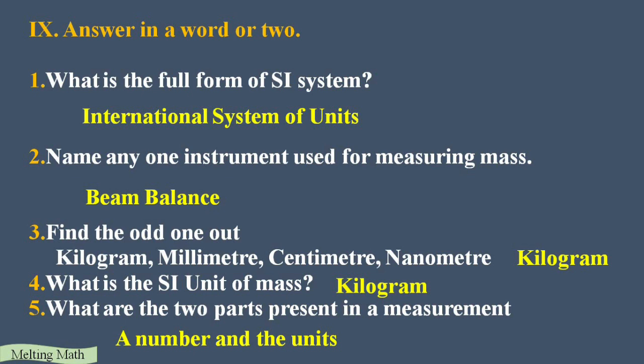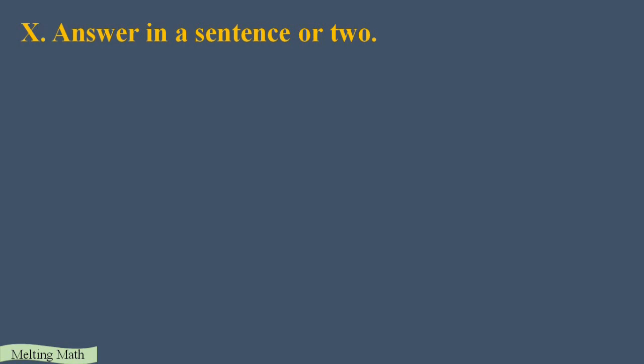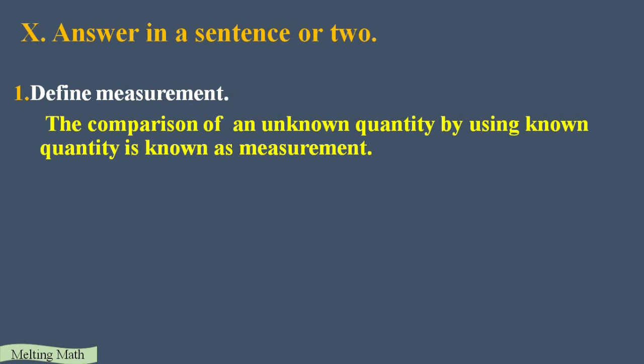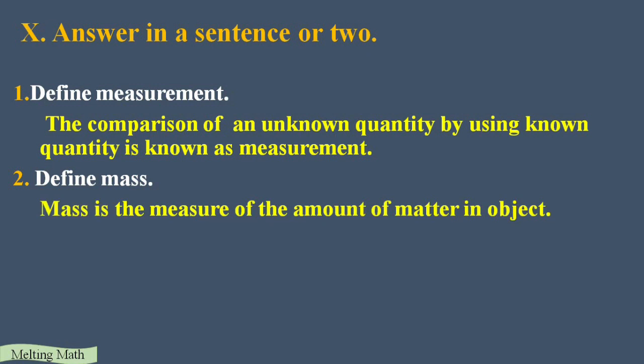Next section — answer in a sentence. First: define measurement. Measurement is the comparison of an unknown quantity with a known quantity. The unknown quantity is the object we are measuring and the known quantity is the measuring tool, such as a meter scale or measuring cylinder. Second: define mass. Mass is the measurement of the amount of matter in an object.